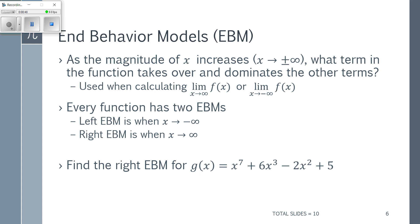The idea behind end behavior models is that as the magnitude of an X value increases in a function, certain terms will begin to dominate the other terms. Once we get to sufficiently large values of X — and I know that's a weird phrase — X gets big enough eventually that one term dominates the others by being so much larger in size that the others don't really make a huge difference.